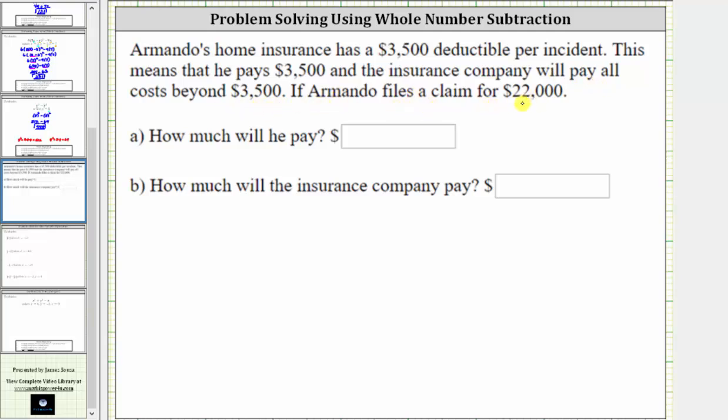If Armando files a claim for $22,000, we first want to determine how much he will pay. He'll pay the deductible amount, which is $3,500.